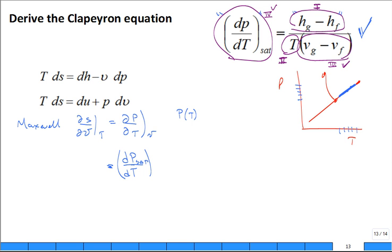So then we have, to change a phase, the S of G minus S of F divided by V sub G minus V sub F.